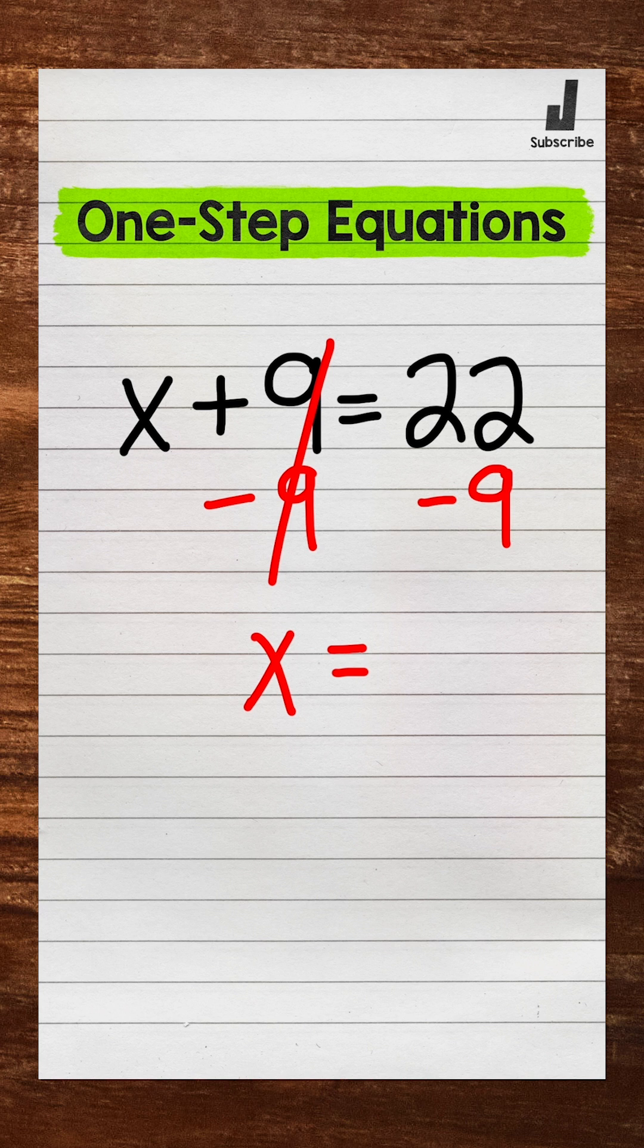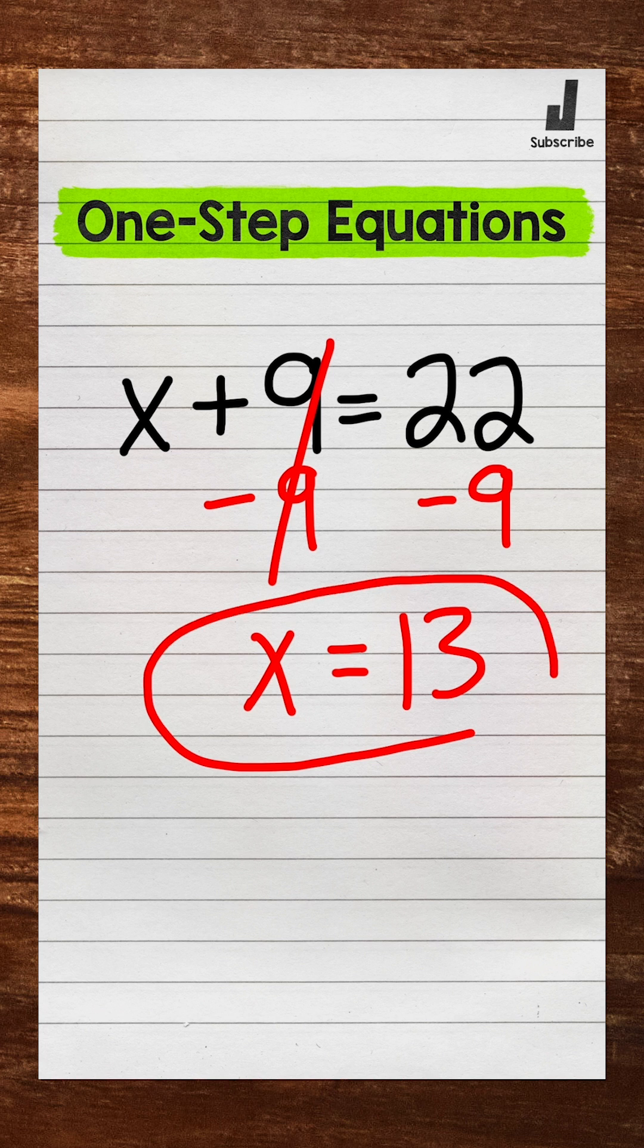We have x equals, and then on the right side, 22 minus 9 gives us 13. x equals 13.